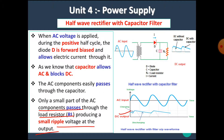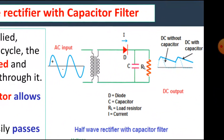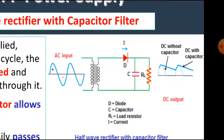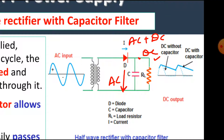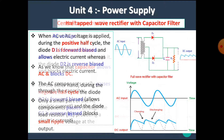Let's see once again the operation of the half wave rectifier with the capacitor filter. The output of the rectifier is pulsating DC — it contains some AC component as well as DC component. We know that the capacitor allows only AC through it. Hence, the AC components pass through this capacitor and at this side we get only the DC voltage. Hence, we use the capacitor as a filter here.